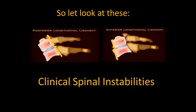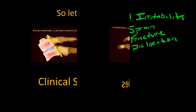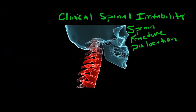Let's look at these clinical instabilities now with a drawing. Clinical spinal instability can occur from a spinal sprain, which is a ligament injury that includes disc injury, a spinal fracture, or a spinal dislocation — all of these can cause clinical spinal instability.